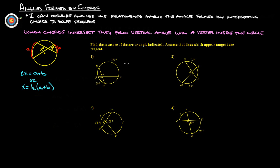So, question mark, let's get a color you can see, question mark is going to equal 170, because that's this arc here, plus 50 divided by 2. So question mark and this one is simply going to be 220 over 2, which equals 110 degrees. So both of these are 110 degrees.